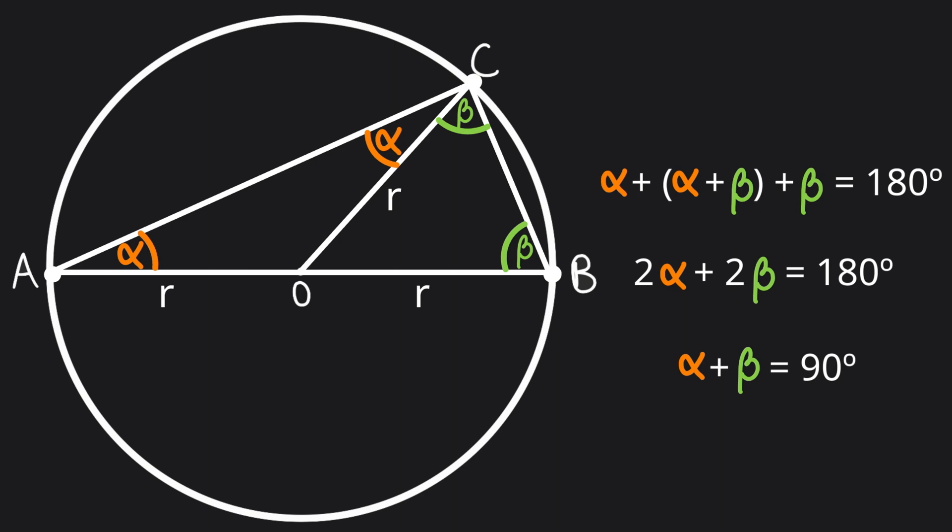Due to the fact that the angle at C is alpha plus beta, and we just proved that alpha plus beta is 90 degrees, the angle at C is always going to be equal to 90 degrees.